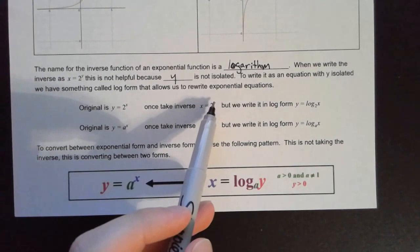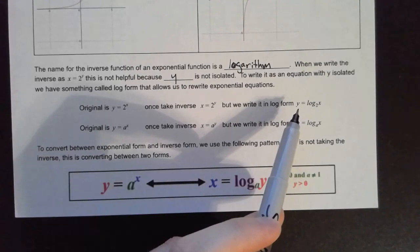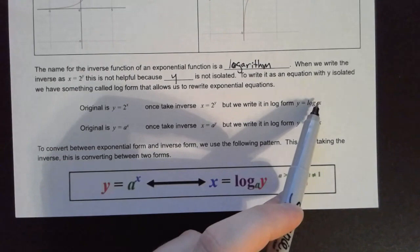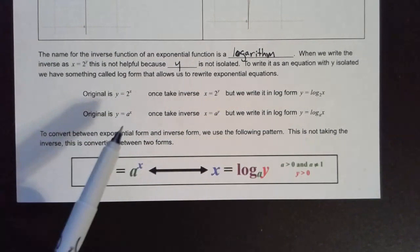Your exponent becomes your output of the function — it's by itself on one side of the equation, which is what we want. Our original answer, this X by itself, becomes the argument of this log function. So we're taking the log base 2 of X — you might see parentheses around the X sometimes.